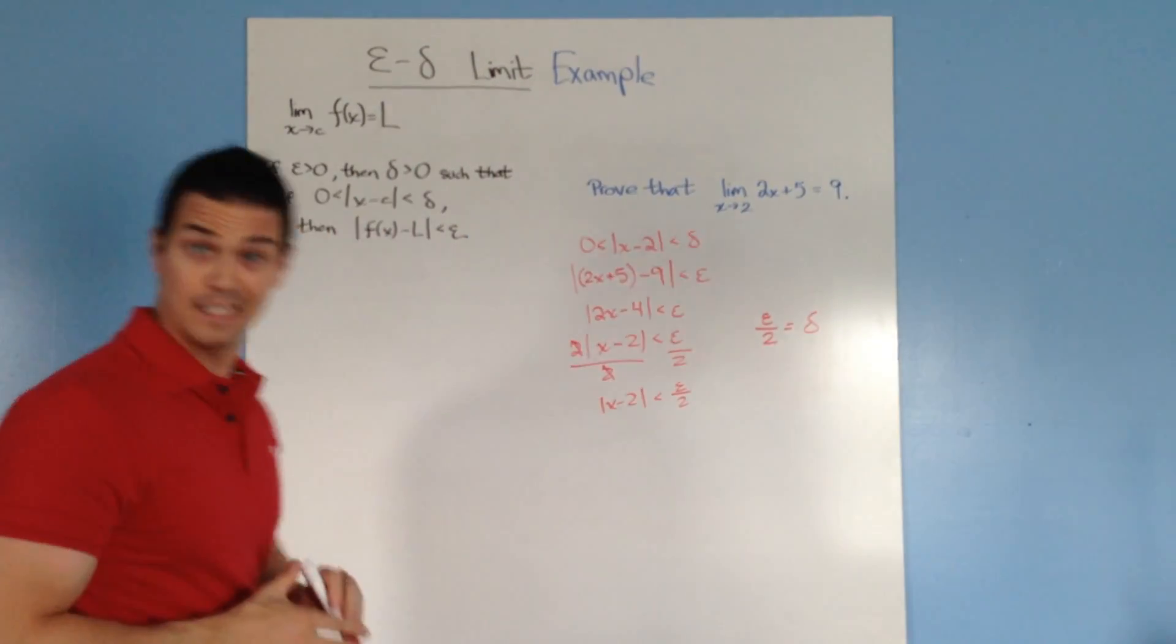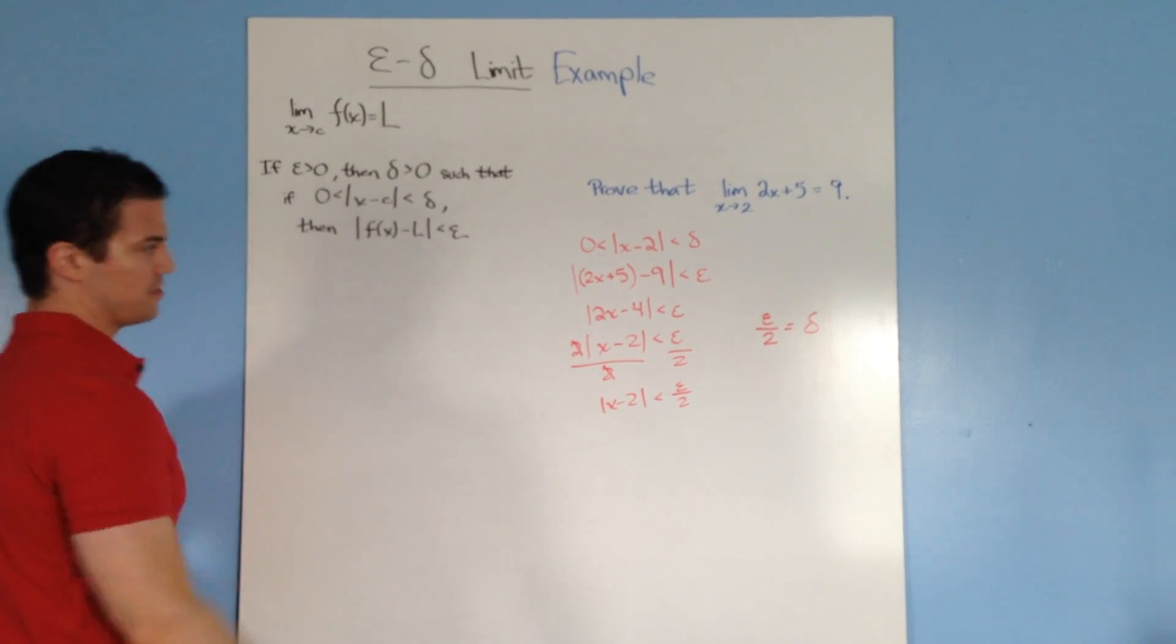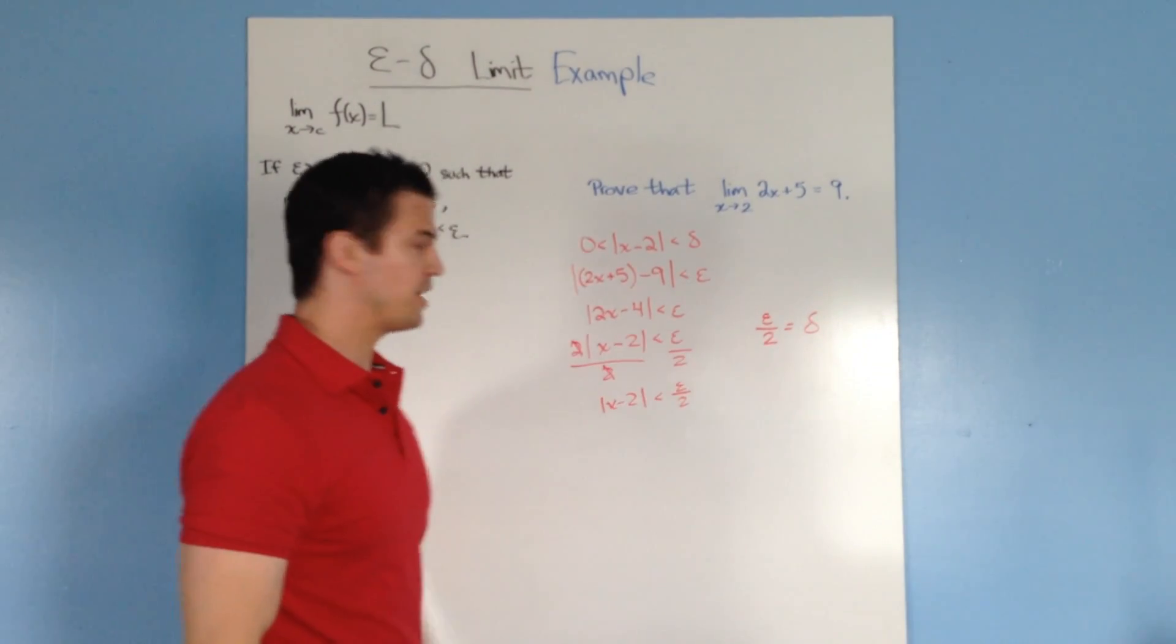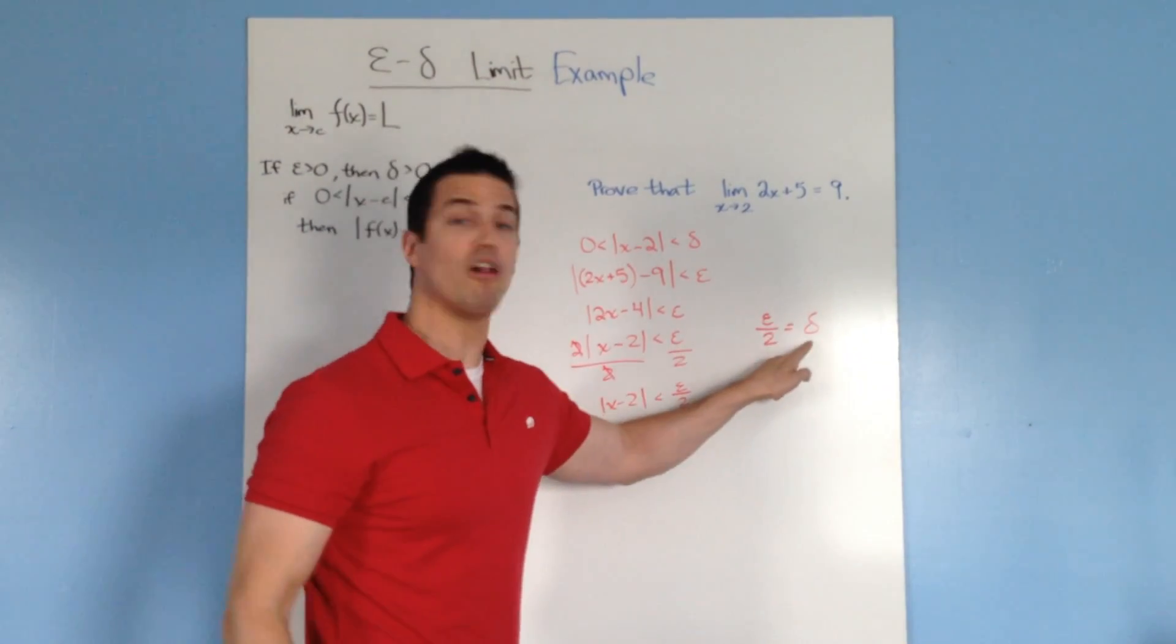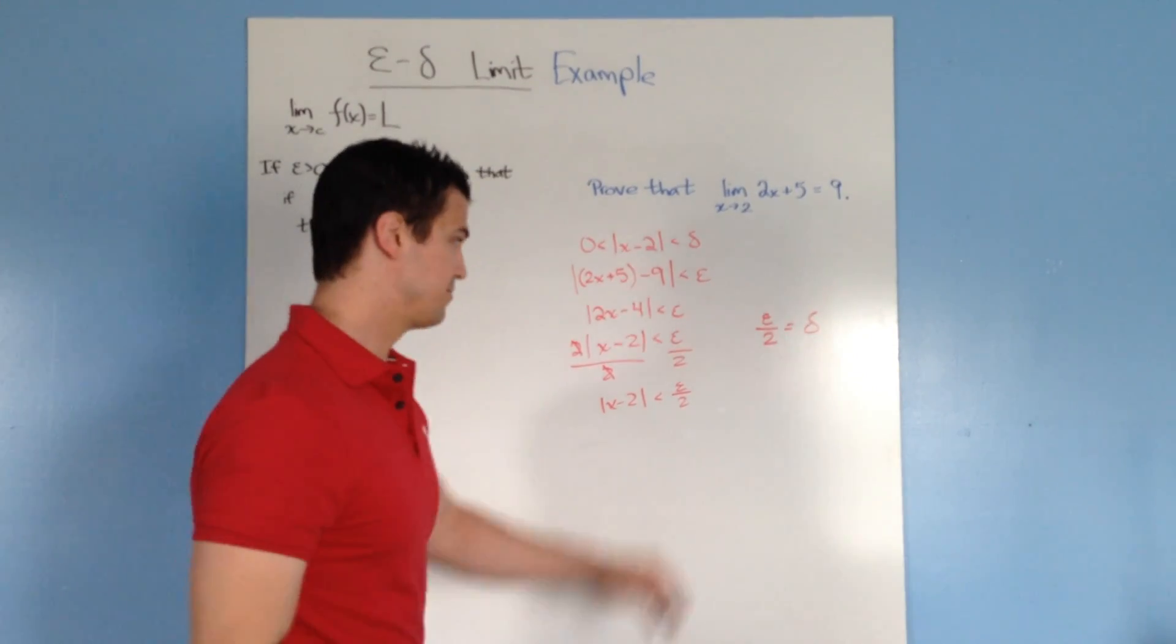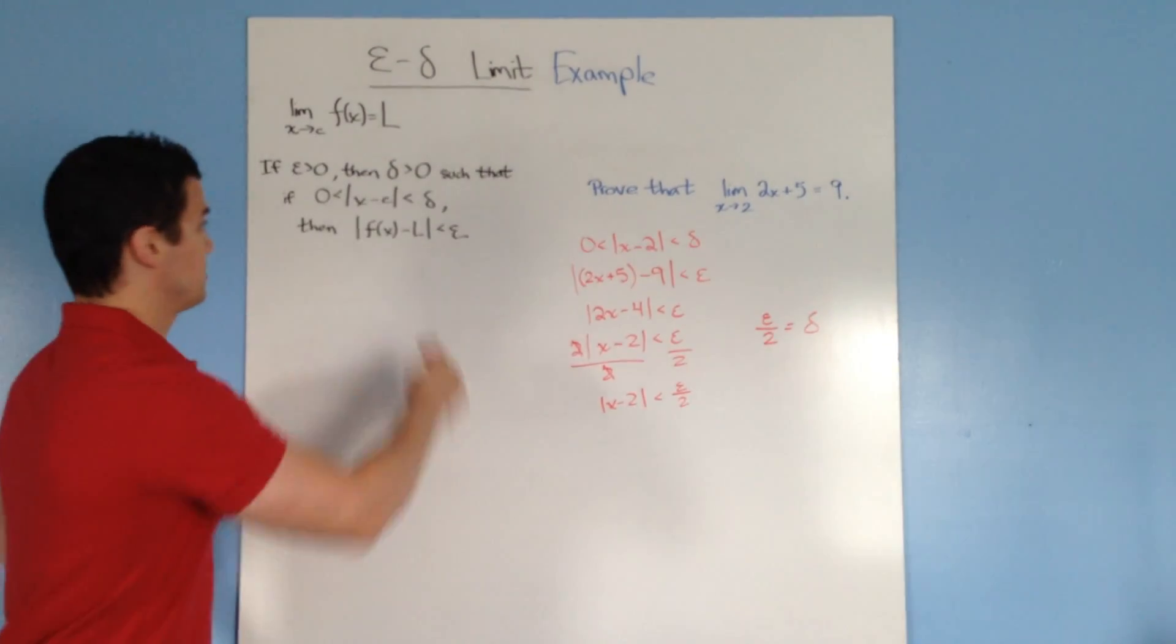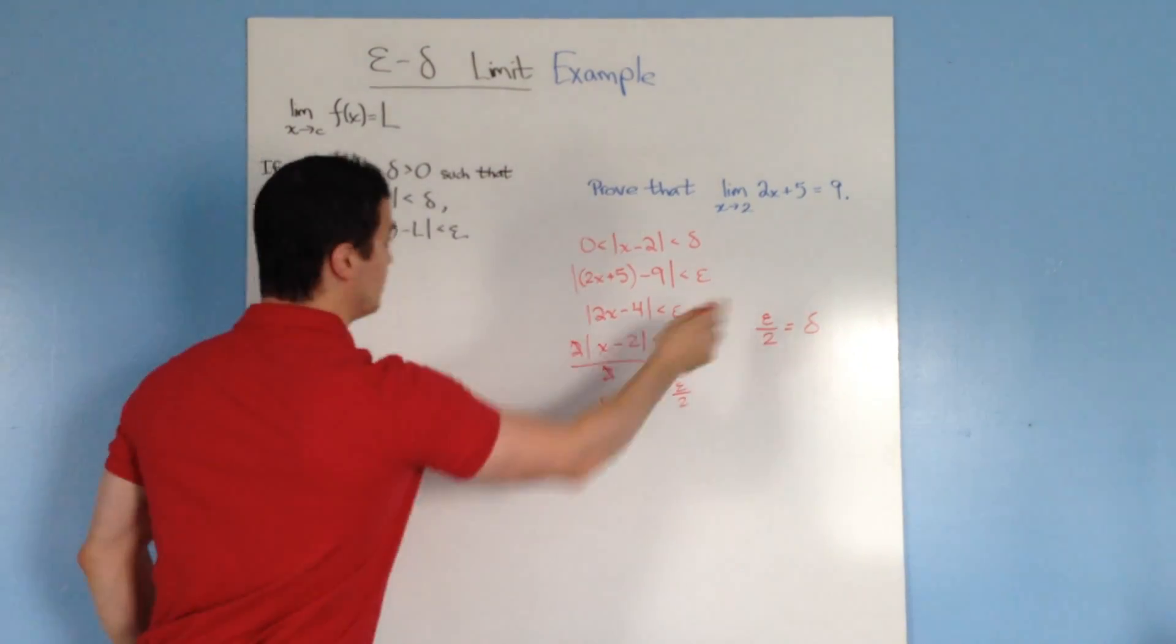Now, if we look back at our definition, it says if epsilon is greater than 0, then delta is greater than 0. Well, if you put any value greater than 0 for epsilon and divide it by 2, you're always going to get a positive delta. Every single time. It doesn't matter what value you pick for epsilon. If it's greater than 0, you will get a positive delta, which satisfies our requirement that if epsilon is greater than 0, then delta is greater than 0. That's correct.